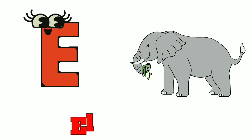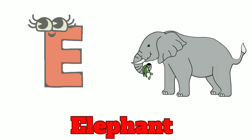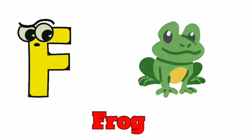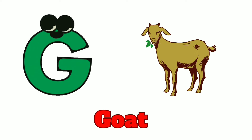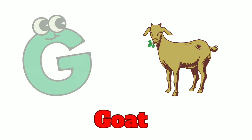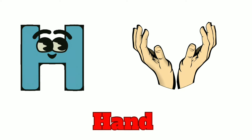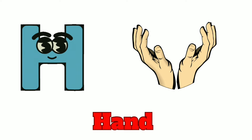E is for Elephant, E-E-Elephant. F is for Frog, F-F-Frog. G is for Goat, G-G-Goat. H is for Hand, H-H-Hand.